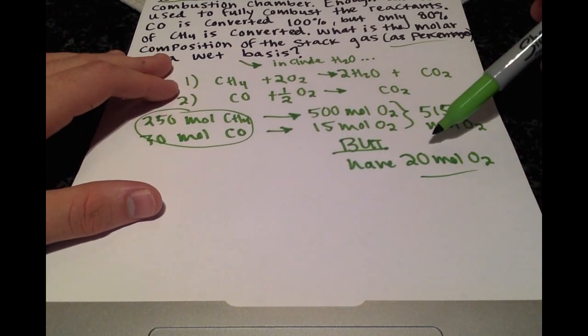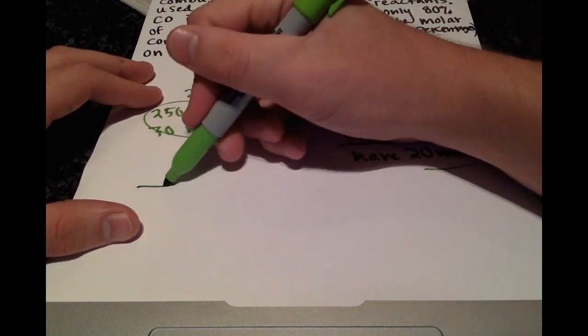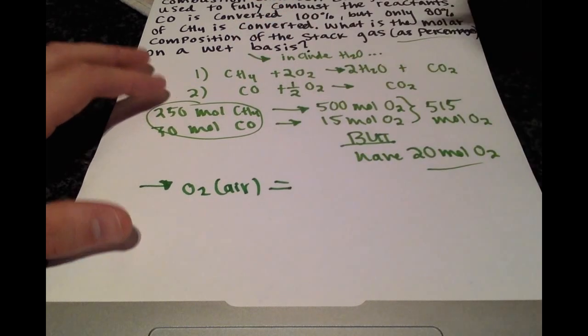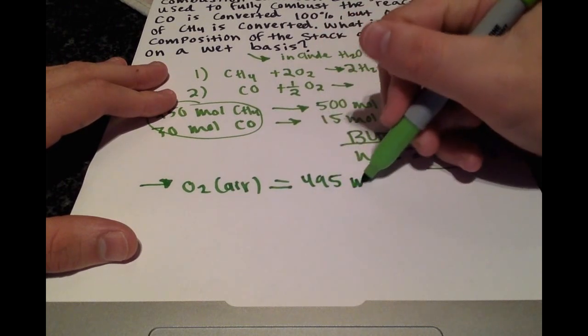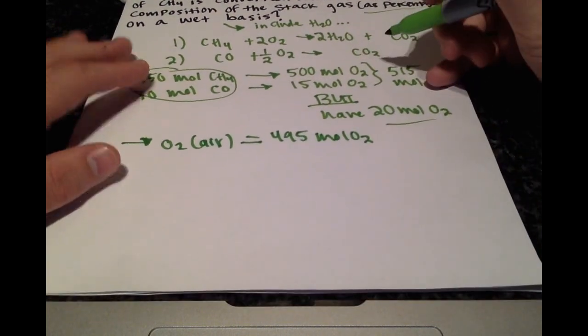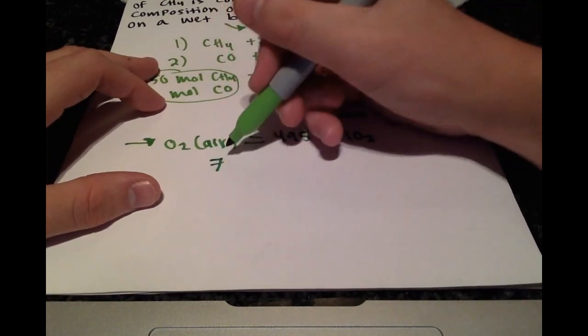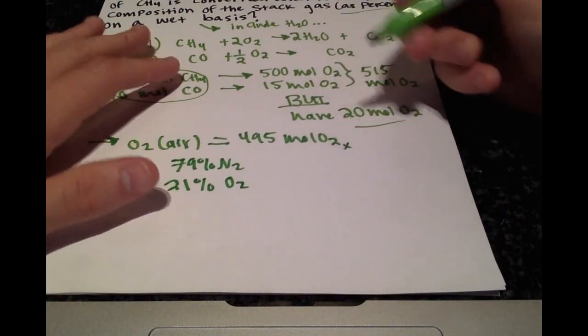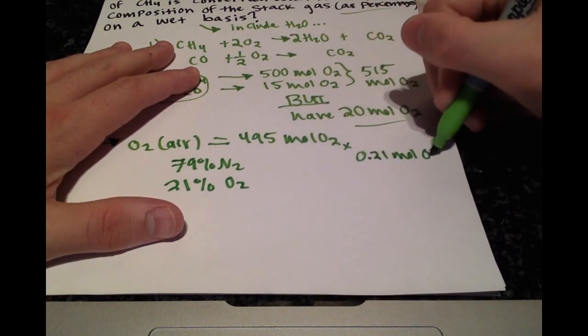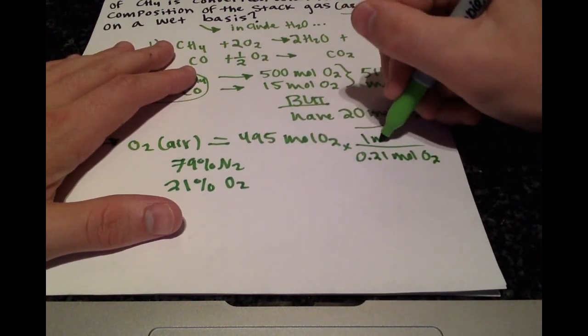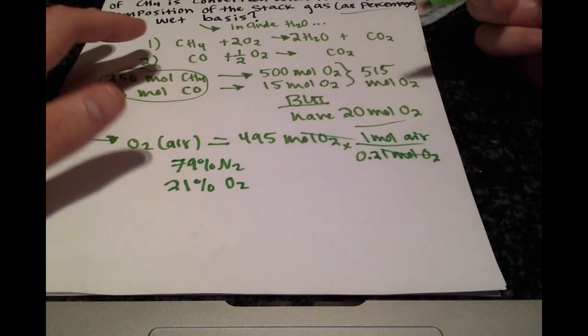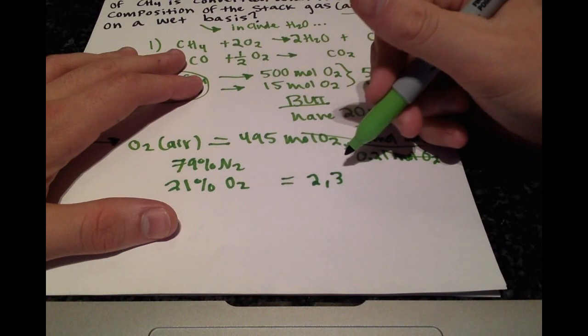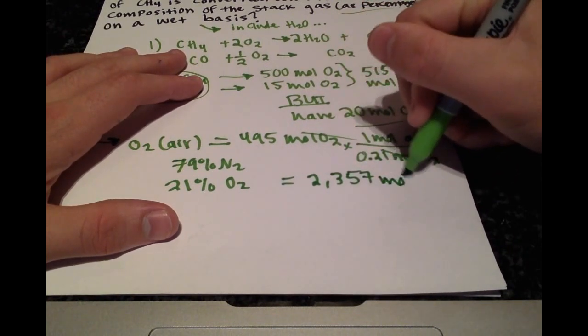Because we need 515 and we already have 20 moles, the oxygen in the air is going to be 495 moles of O2. In air we know that there is 79% nitrogen and 21% oxygen, so we can use that relationship and say that there are 0.21 moles of oxygen for every 1 mole of air. Doing that calculation we'll get that we need 2,357 moles of air.